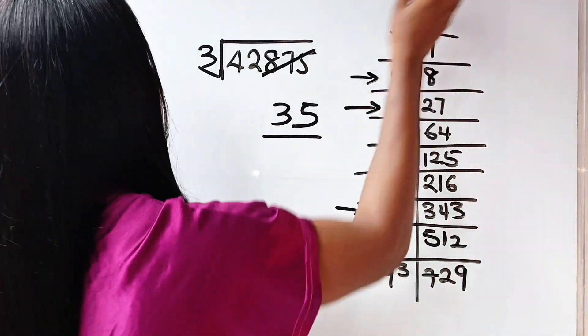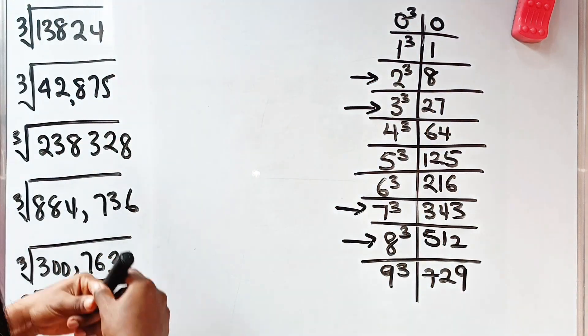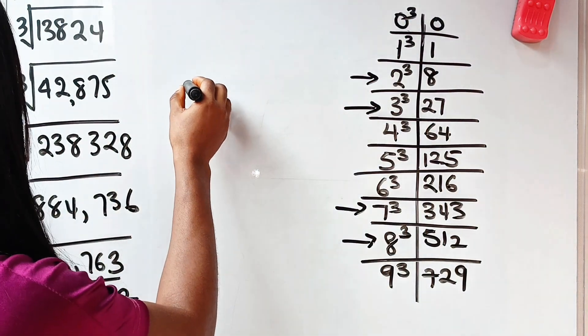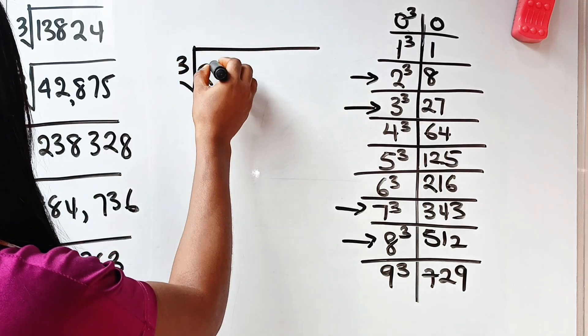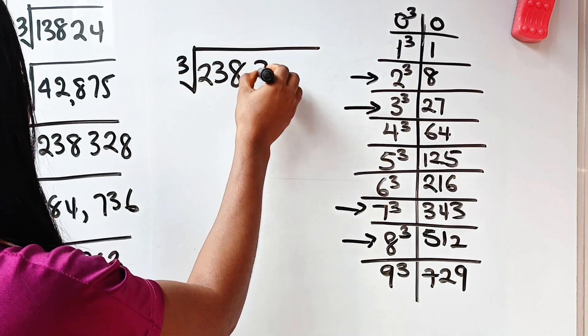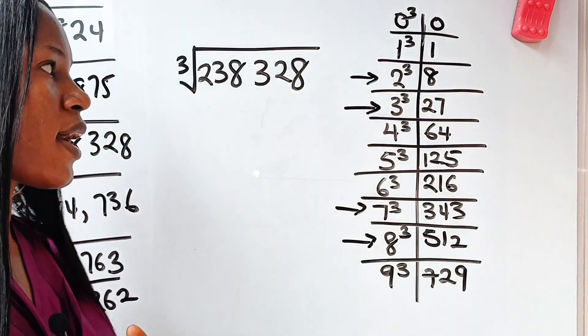Okay. Now, the next one. I would like you to join me and solve this, because this, you should be able to try this. Now, we have cube root of 238,328. 238,328.